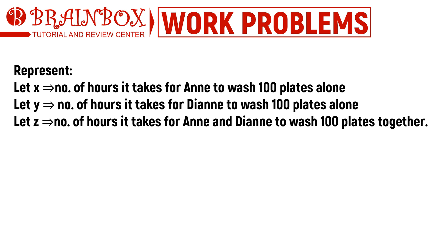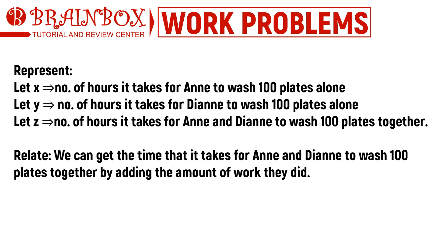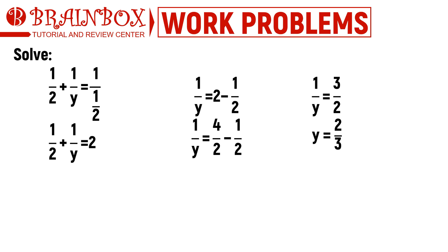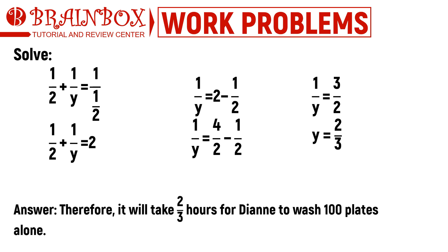We assign variables: x is the hours for Anne to wash 100 plates alone, y is the hours for Diane to wash 100 plates alone, and z is the hours for both together. Using the general formula: 1 over 2 plus 1 over y equals 1 over one half. After solving the equation, we get y equals two thirds. Therefore, it will take two thirds of an hour for Diane to wash 100 plates alone.